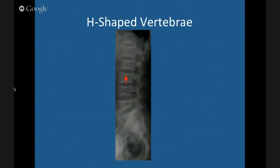H-shaped vertebrae in sickle cell disease: the end plates are depressed centrally. Two theories explain this: first, the central portion of the end plate has the lowest perfusion, predisposing it to infarction and collapse; second, marrow hyperplasia in sickle cell disease causes expansion of the mid-body that eventually fails and collapses centrally. The result is an H-shaped vertebral body — classic for sickle cell disease.